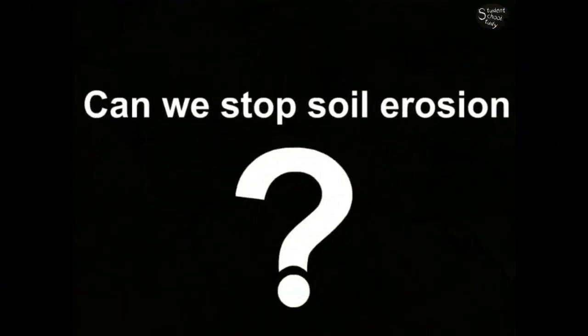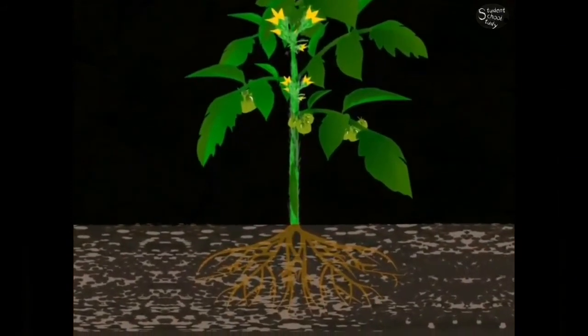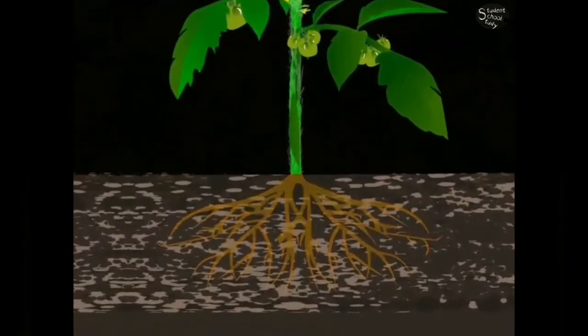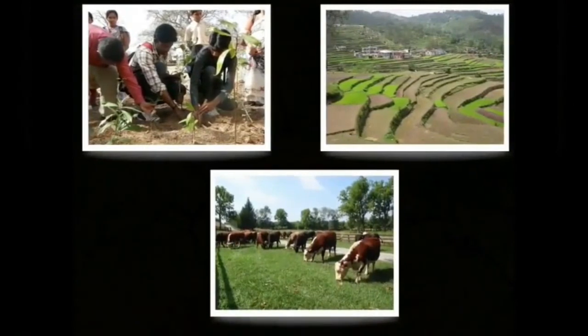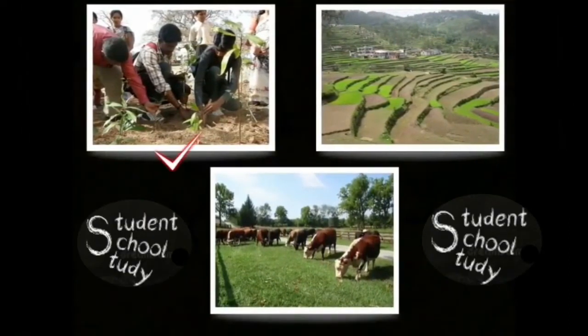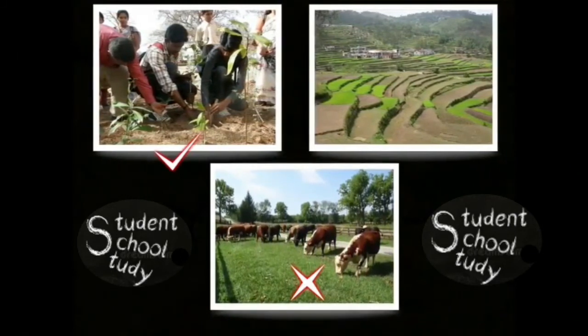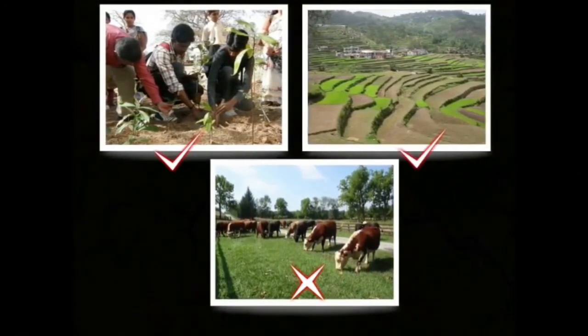Can we stop soil erosion? Let's see. Plant roots bind the soil in position and prevent it from being washed away. So children, we should plant more trees, stop overgrazing of animals and practice terrace farming.